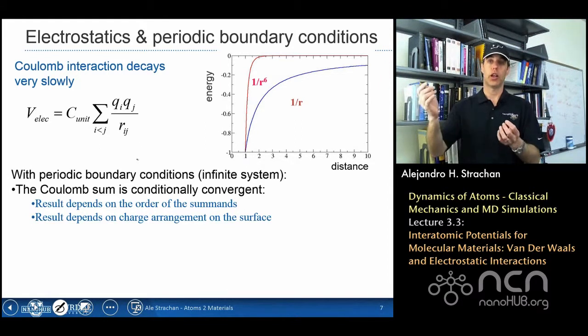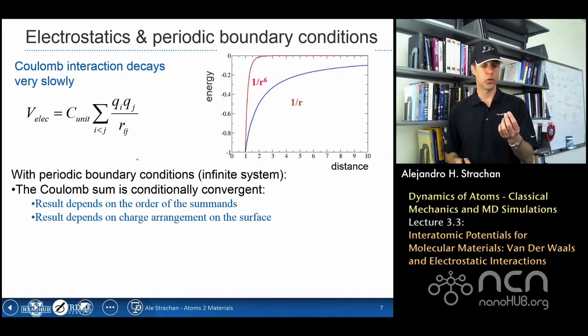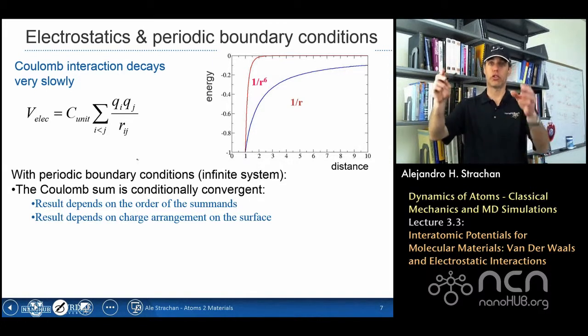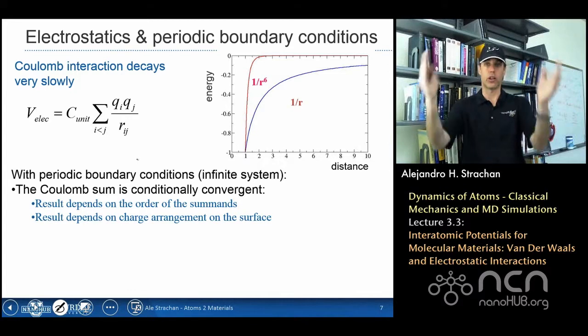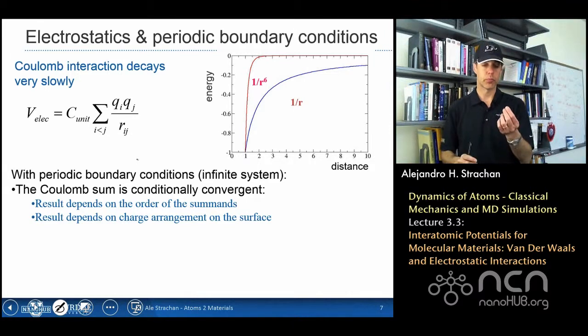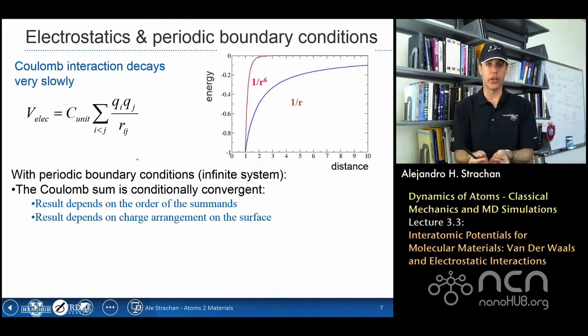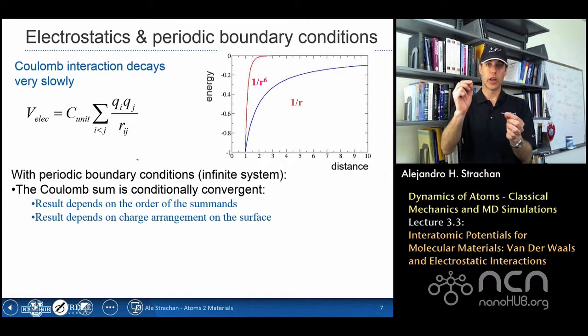What happens is that physically the interaction is so long range that whenever I add more atoms to the system, that new layer of atoms has a stronger effect than all the previous atoms combined. So imagine I have an atom at the origin, and I'm looking at its interaction with concentric spherical shells of atoms, and I'm going to grow my infinite system one concentric shell at a time. Whenever I add a new shell, the number of atoms in that thin shell is going to grow with r squared, and that's the area of a surface of radius r.